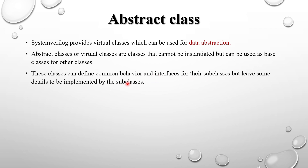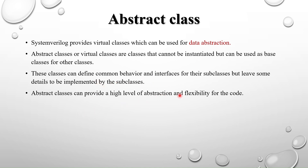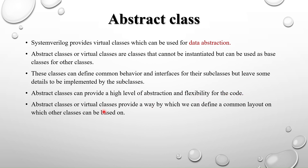In the abstract class we define the common behavior so that multiple subclasses or derived classes can include that common behavior. We implement that common behavior in the subclasses, and it leaves some details to be implemented by the subclasses — for that we have a method called pure virtual methods. Abstract classes can provide a high level of abstraction and flexibility for the code, and they provide a way to define the common layout on which other classes can be based on.